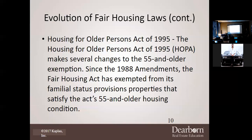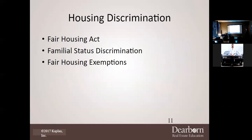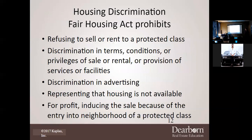In 1995 we made several changes to the 55 and older exemption. Since the 1988 amendments, the Fair Housing Act has exempted from its familial status provisions those properties that satisfy the 55 and older housing conditions. Familial status discrimination and fair housing exemptions are very key topics to understand.